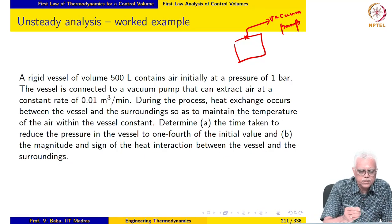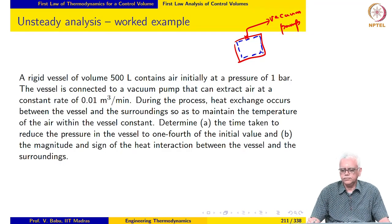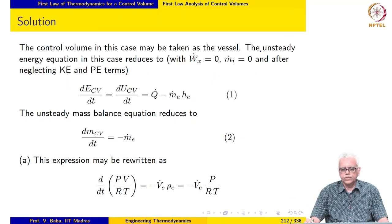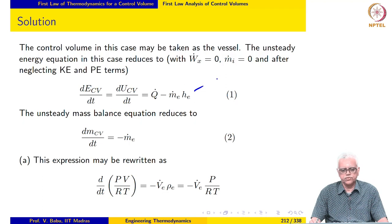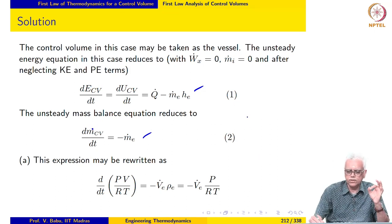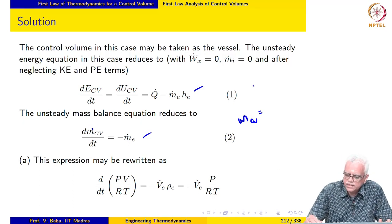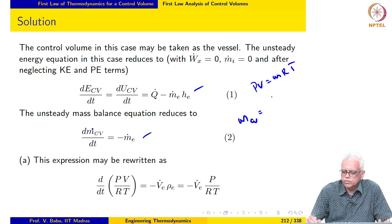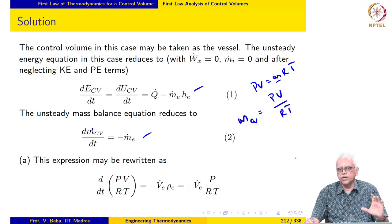The control volume suitable for this case is defined. The unsteady flow energy equation simplified to this situation: W_x_dot is 0, M_i_dot is 0, and M_e_dot is non-zero. This gives the unsteady mass balance equation. M_cv, the mass inside the control volume at any instant, is PV/RT using the ideal gas equation of state PV = MRT, where P, V, and T are evaluated at each instant.